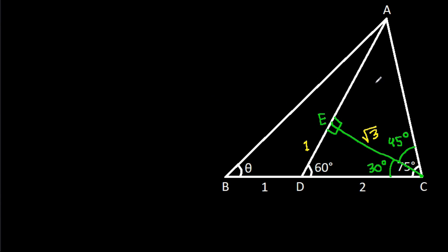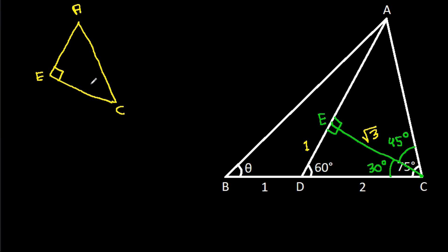Now, in angle AEC — this angle is 90 degrees and this angle is 45 degrees — so this angle will also be 45 degrees. That means AE will be equal to CE, and CE is root 3, so AE will be root 3.